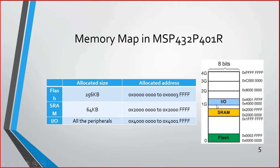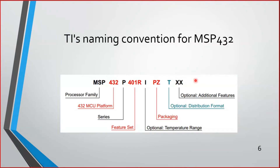All the peripherals are present from 0x40000000 to 0x4001FFFF. IO peripherals include all the GPIO as well as peripherals such as timer, ADC, UART, etc. In this memory space all the peripherals are mapped.